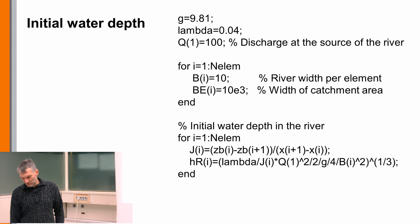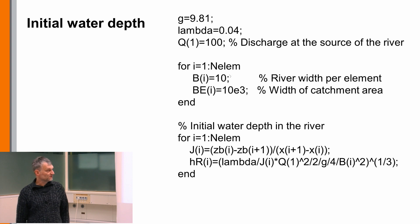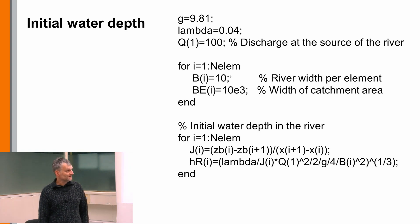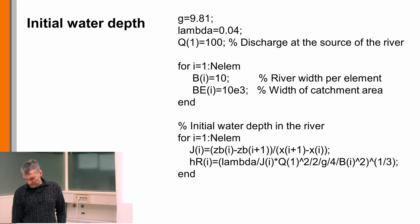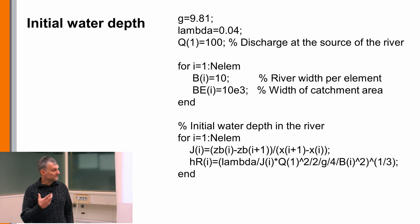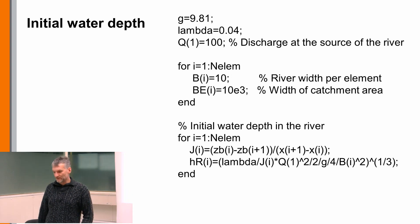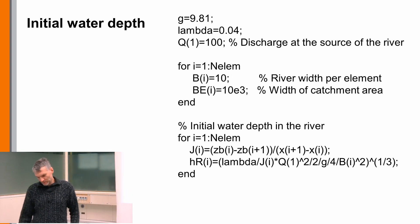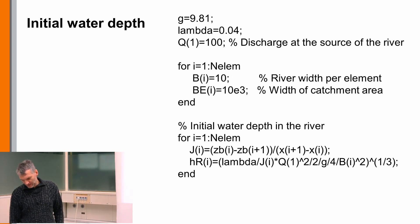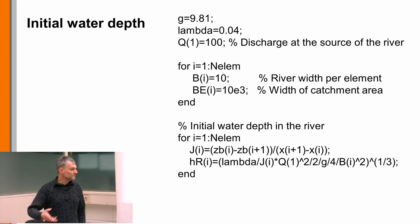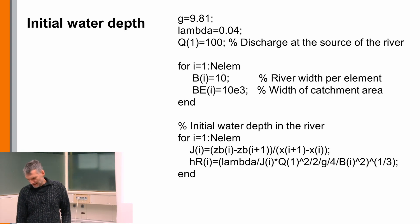For every element we define how large the compartment is — specifically the width b of the compartments. In this case the river has a width of 10 meters everywhere, but we can also vary the width per compartment.